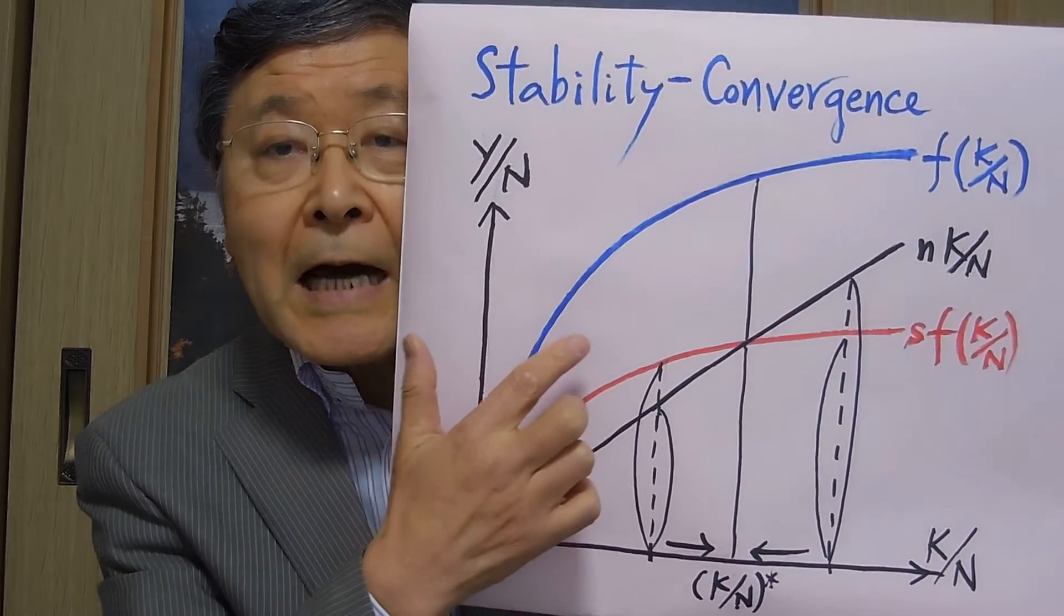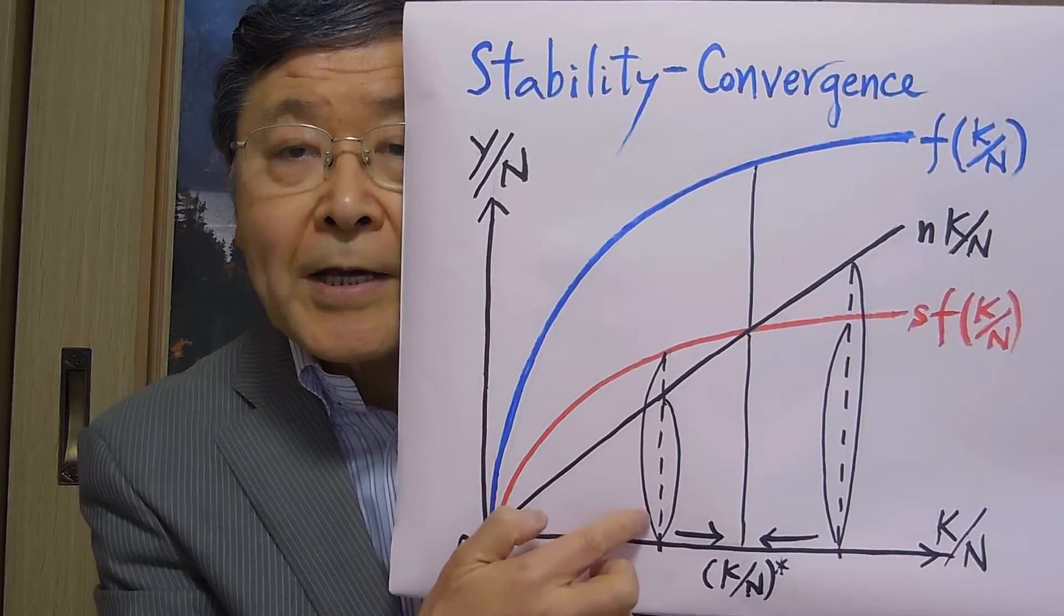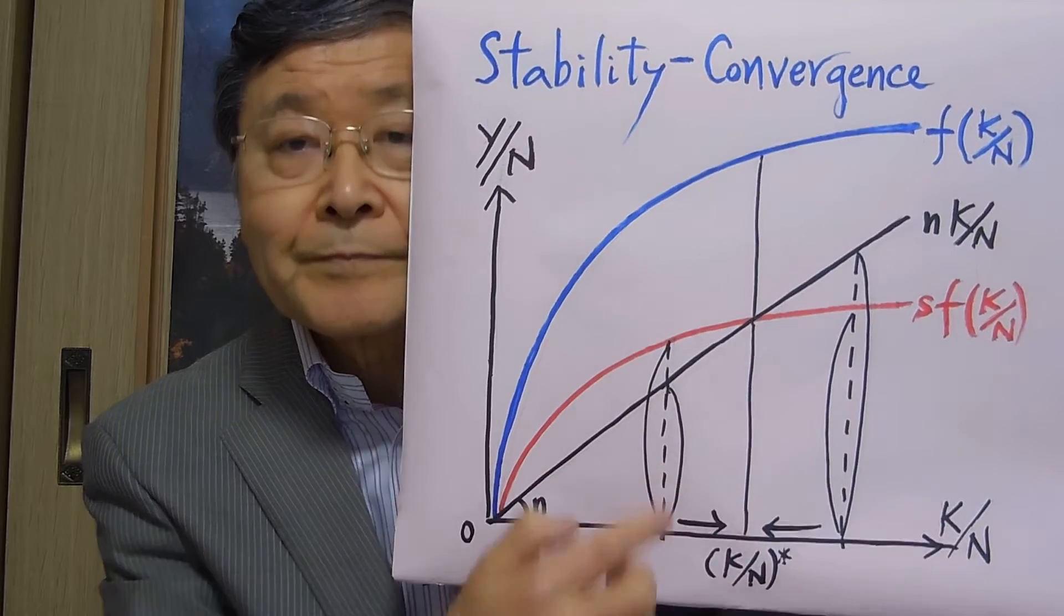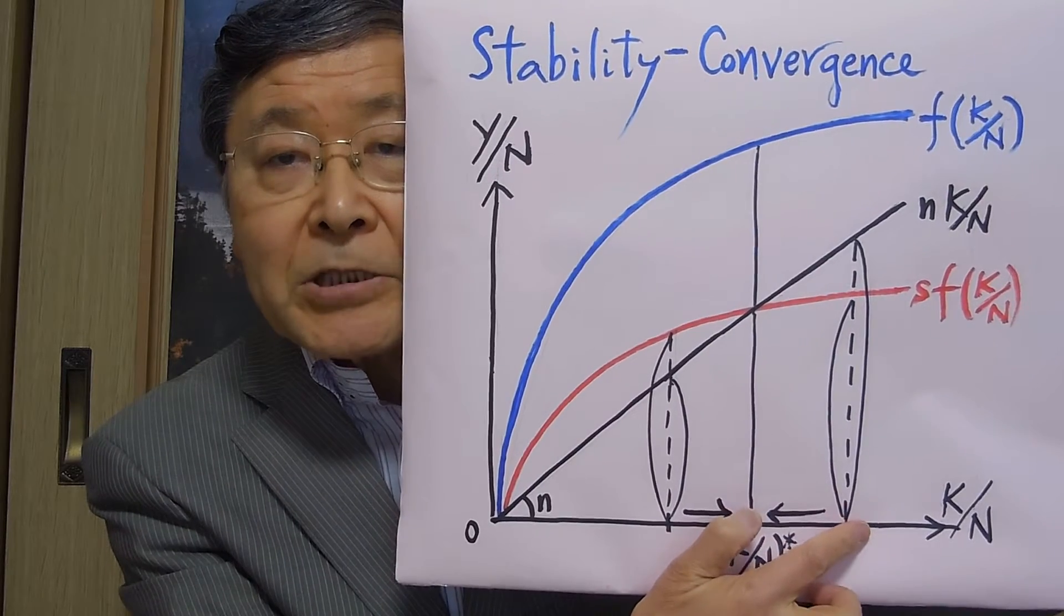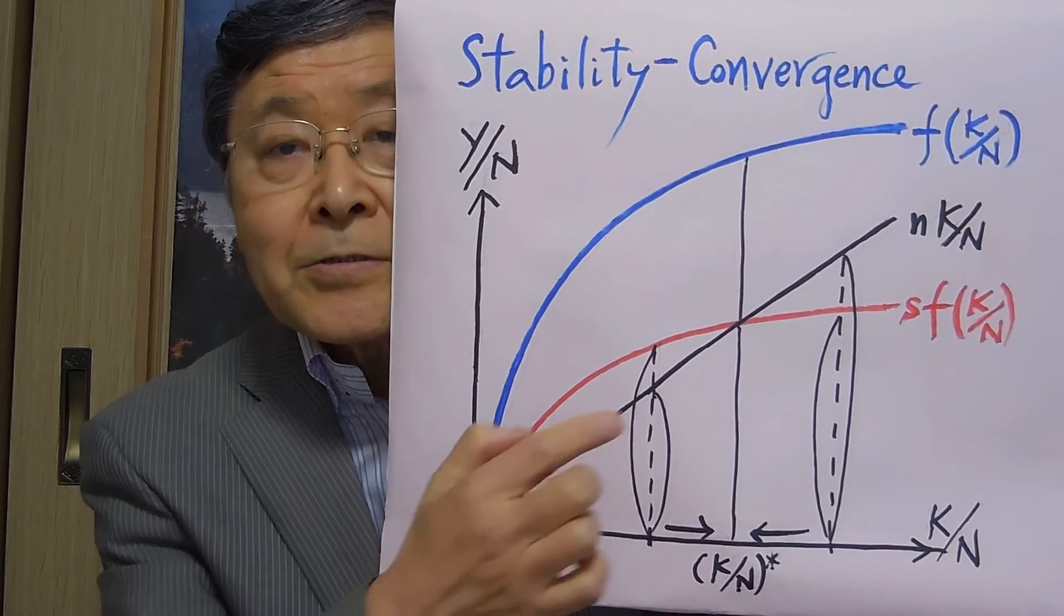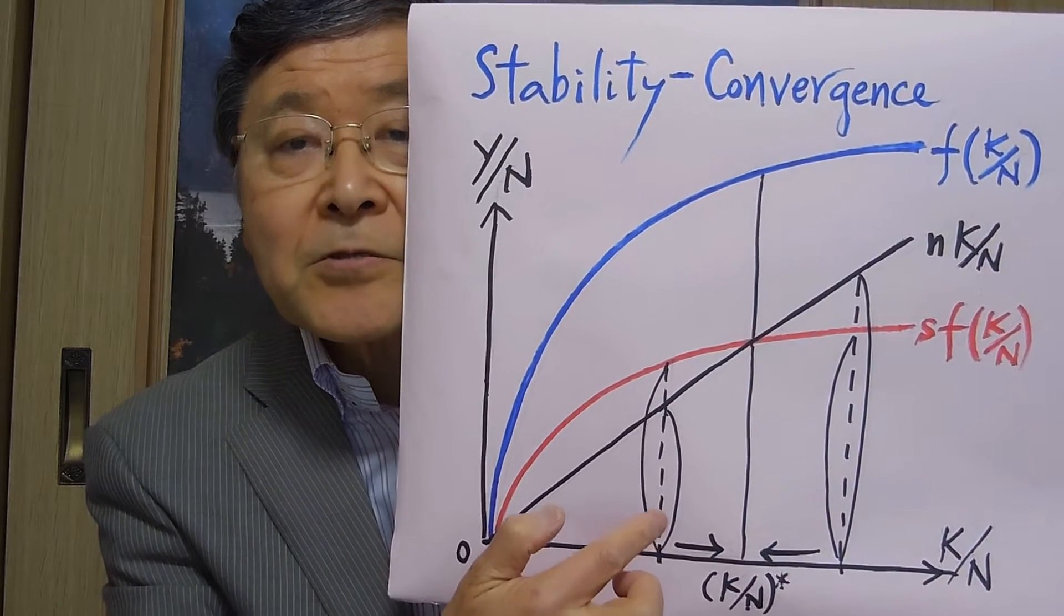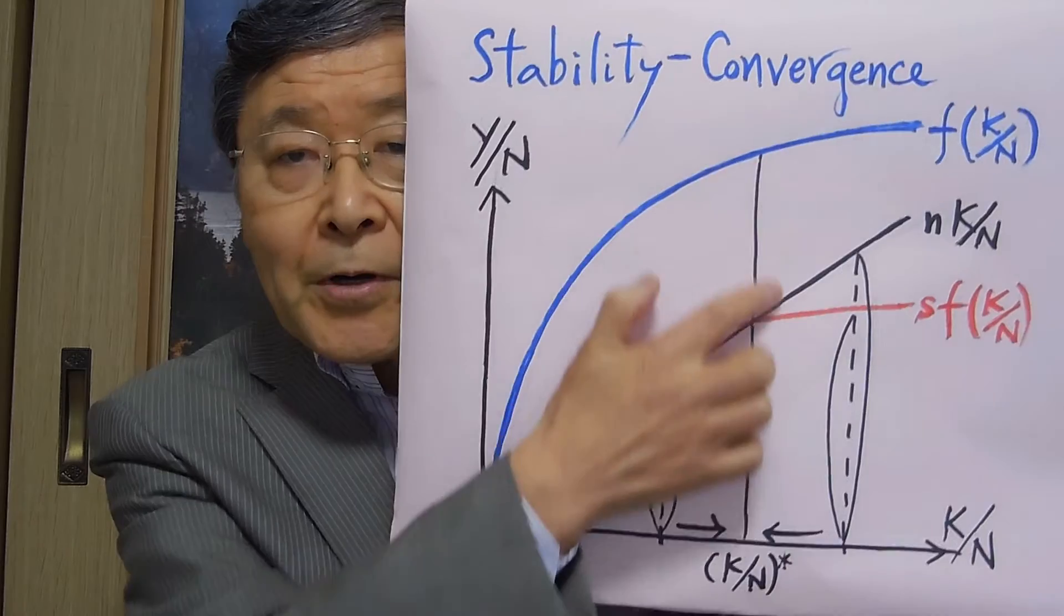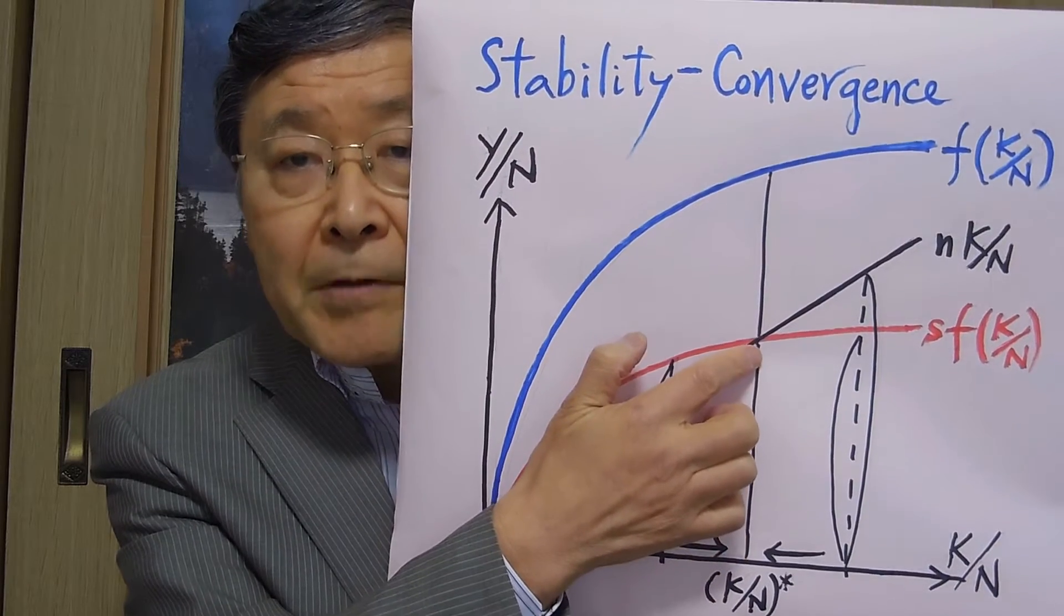So, when you start out at this low level of capital-labor ratio, the rate of increase in capital is greater than the rate of increase in labor force. On the other hand, if you start out at this very high level of capital-labor ratio, the rate of increase in capital stock is less than the rate of increase in the labor force. So that the capital-labor ratio tends to decrease, and the path tends to converge to this value, K over N asterisk. That's the stable equilibrium, or steady-state equilibrium, where rate of capital increase is the same as the rate of population increase.